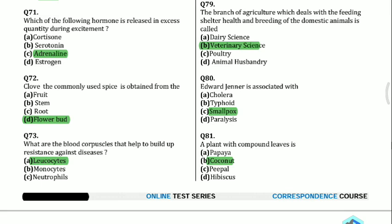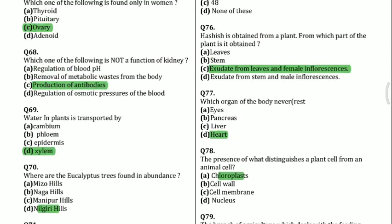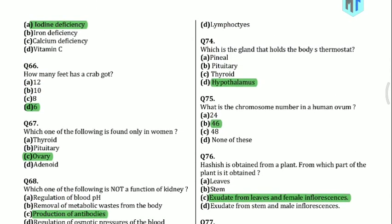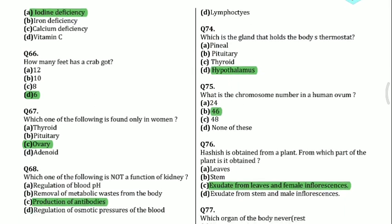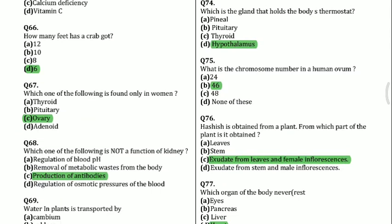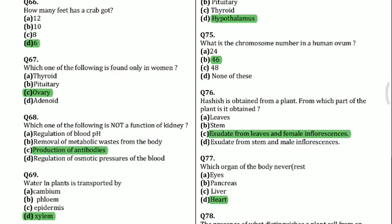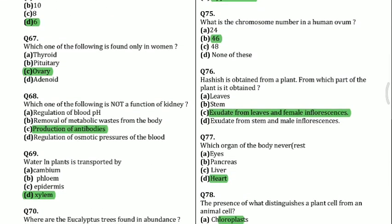Question 73: What are the blood corpuscles that help to build up resistance against sickness and disease? Leukocytes. Question 74: Which is the gland that holds the body's thermostat? Hypothalamus. Question 75: What is the chromosome number in human ovum? 46.